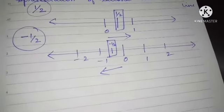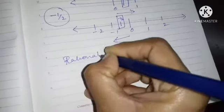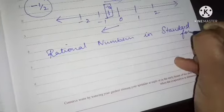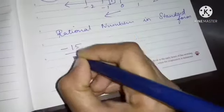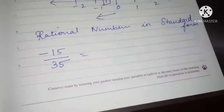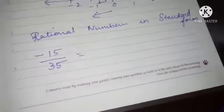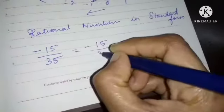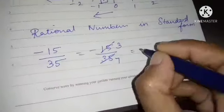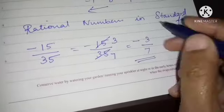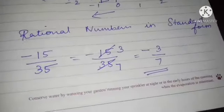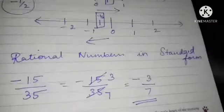Next: rational numbers in standard form, which means simplest form. For example, minus 15 by 35 — ignore the minus sign and simplify the fraction: 15 and 35 are both divisible by 5, giving 3 by 7. Then put the minus sign back to get minus 3 by 7. Do the same as you would with fractions, keeping the sign as it is.